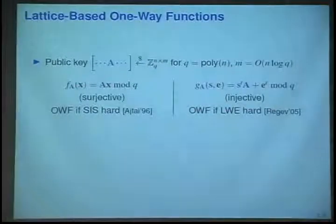On the left, we just take a short x, a short random x with small integers, integer entries, and we just take A times x. This is hard to invert if the famous SIS problem is hard from Ajtai 96.